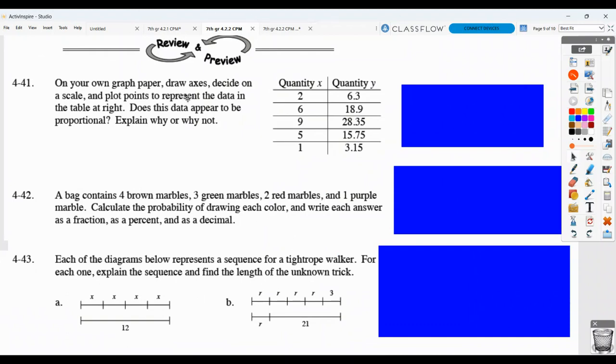on graph paper, you are supposed to draw the axes, decide on a scale, and plot points to represent this data. And then you're answering the question, does the data appear to be proportional? Why or why not? So, the first thing you need to do is to graph this data.